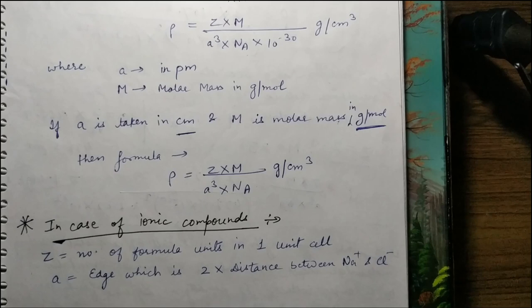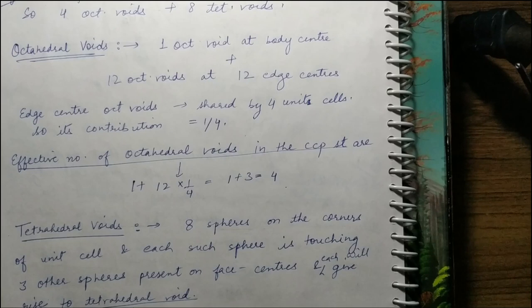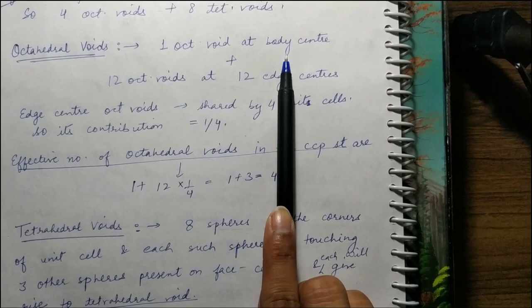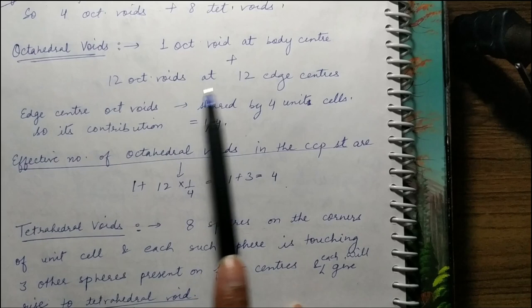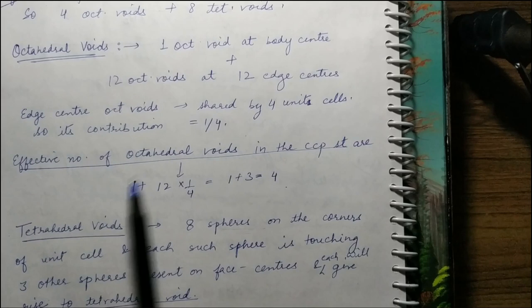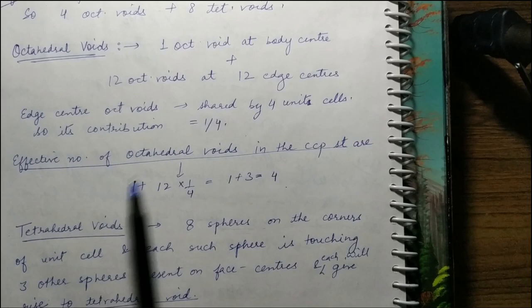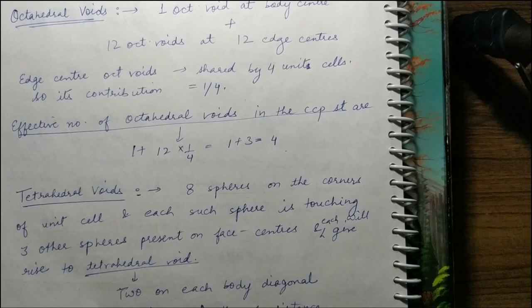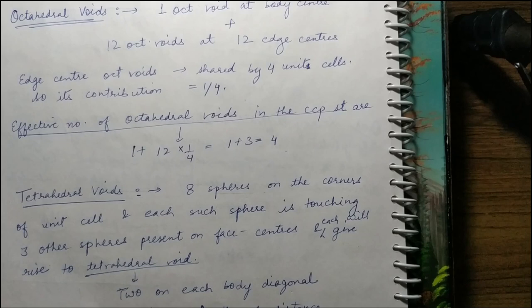Then we studied the location of voids in the crystal. Octahedral voids are present at: one at the body center, plus all 12 edge centers (each shared by 4 unit cells, contributing 1/4 each). So total octahedral voids = 1 + 12×(1/4) = 1 + 3 = 4. Tetrahedral voids are double that, giving 8. So octahedral voids = 4 and tetrahedral voids = 8.